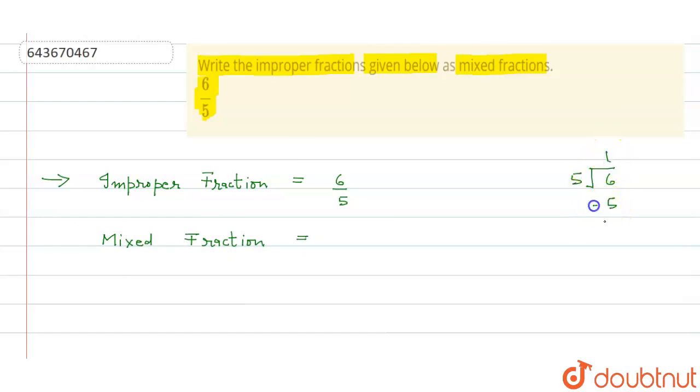Five into five. Now six minus five is one. That means our mixed fraction is one and one by five.